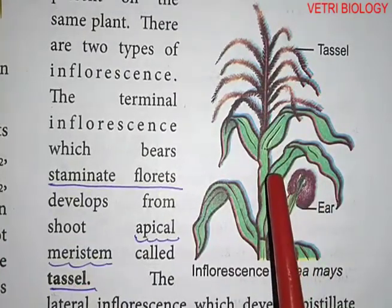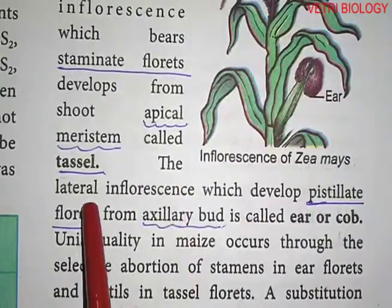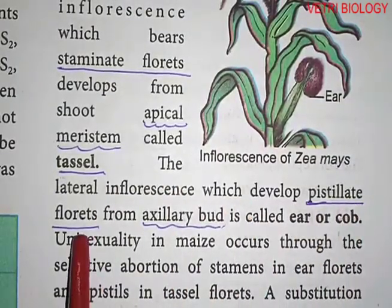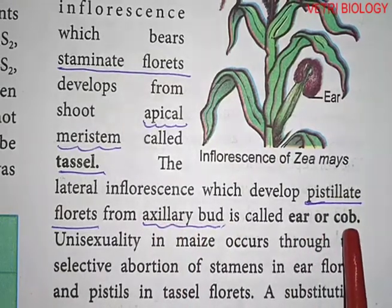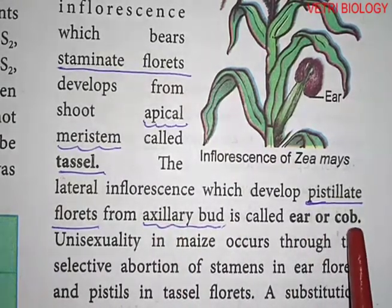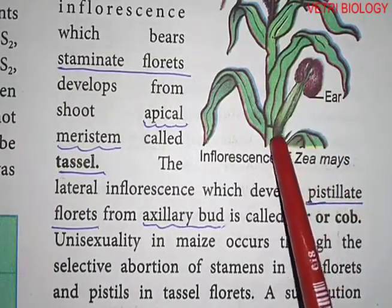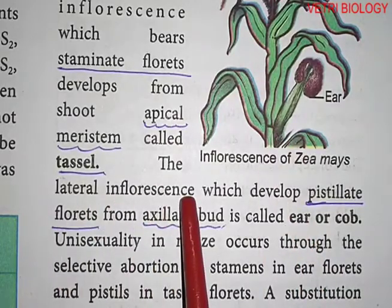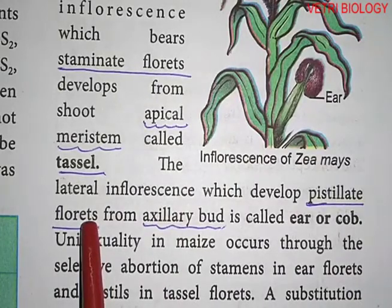The lateral inflorescence, which develops pistillate florets from the axillary bud, is called the ear or cob. It is called lateral inflorescence, and the pistillate florets are the female flowers.